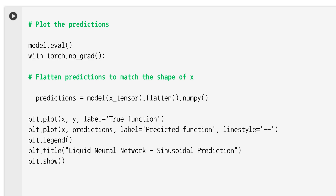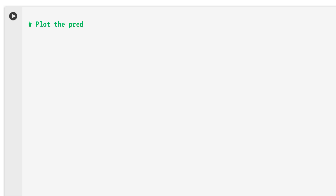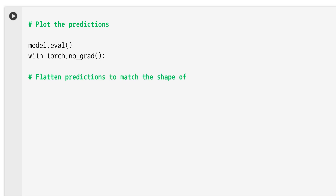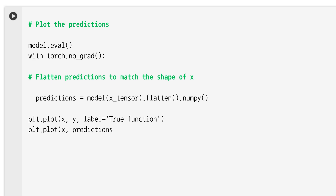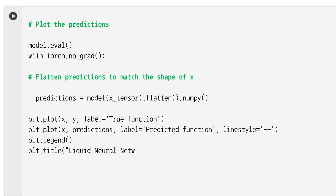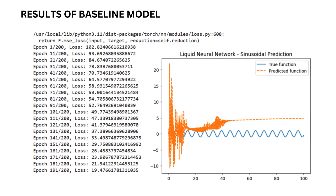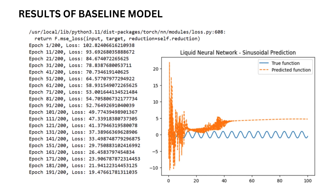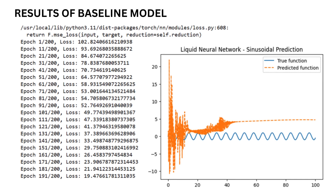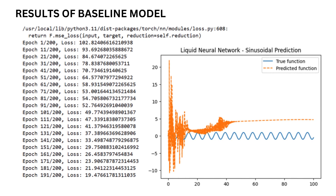After training, the model is evaluated to see how well it can predict the sine wave. In the plot, the true function is the sine curve shown as the actual y = sin(x), and the predicted function is shown as dashed lines representing the model's output after training. After 200 epochs the model is trained and we can evaluate it by plotting the predictions.